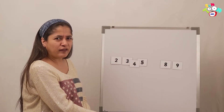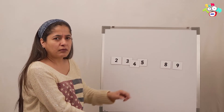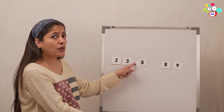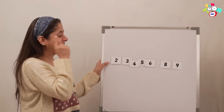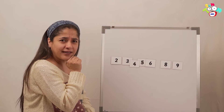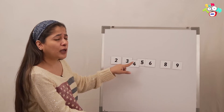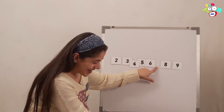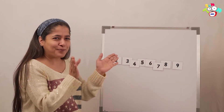Does 8 come after 5? No. Also does 5 come before 8? No. There is something missing here. Let's count and think in our mind: 2, 3, 4, 5, 6! Very good! So 6 is missing. Now it reads: 2, 3, 4, 5, 6, 8, 9 — is that correct? No, something is missing. Let's count in our minds: 2, 3, 4, 5, 6, and yes — 7! So 7 was missing. Absolutely right!